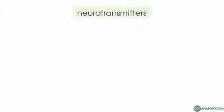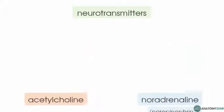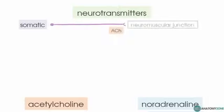The next thing to discuss is the neurotransmitters within the autonomic nervous system. There are two main neurotransmitters: acetylcholine and noradrenaline — noradrenaline being the same as norepinephrine. In the somatic nervous system, the motor neuron releases acetylcholine at the neuromuscular junction.